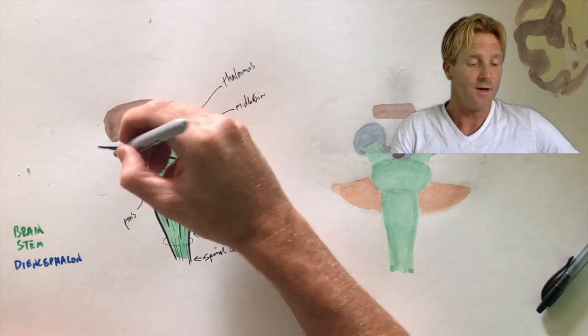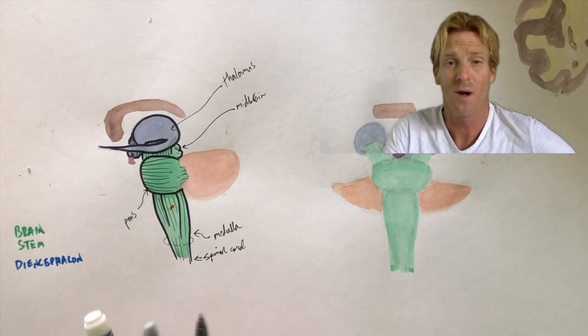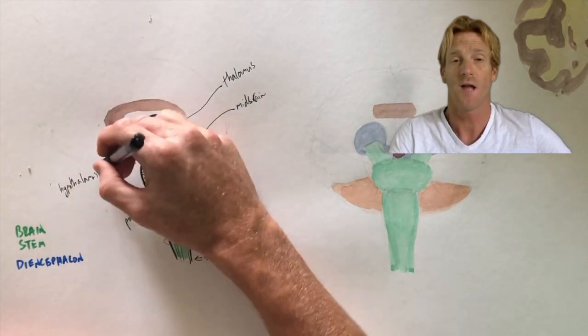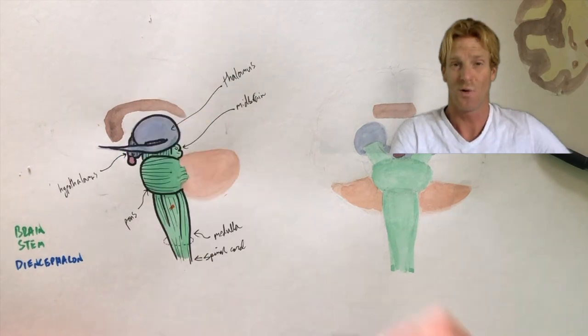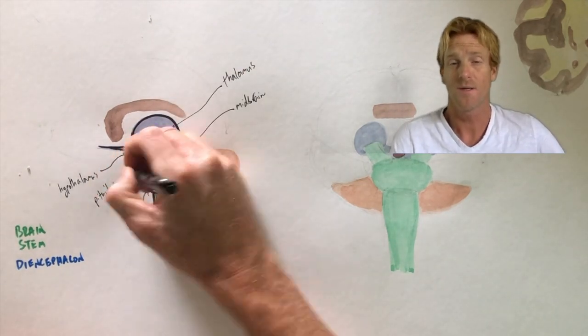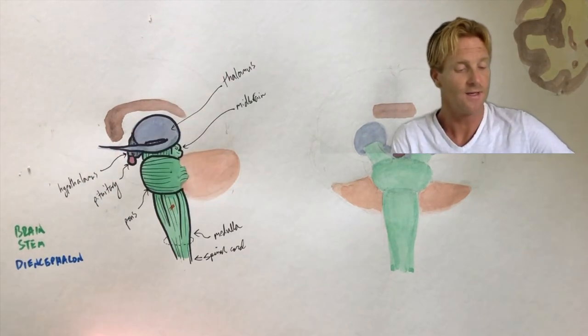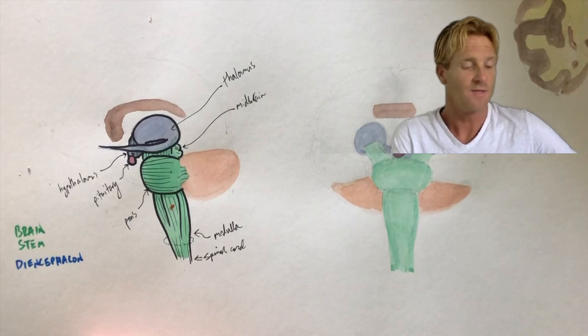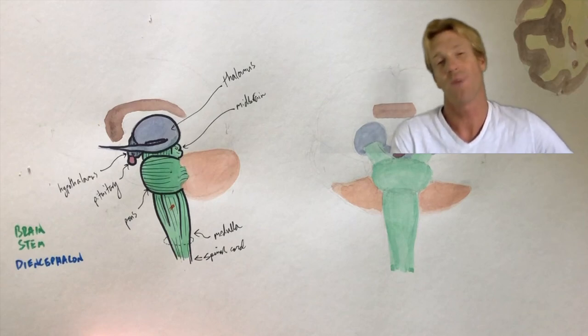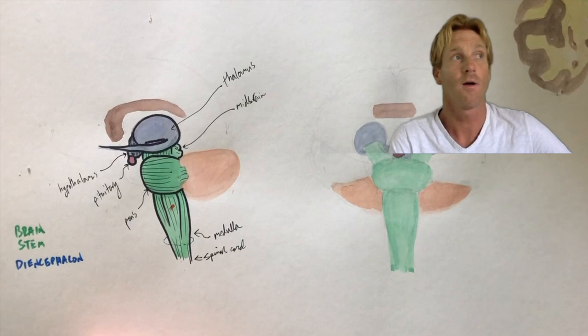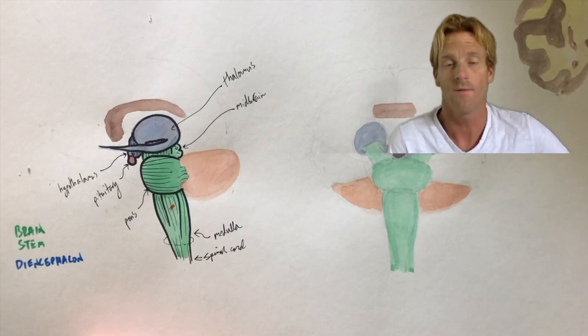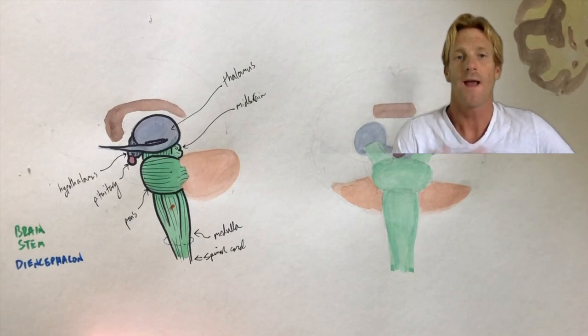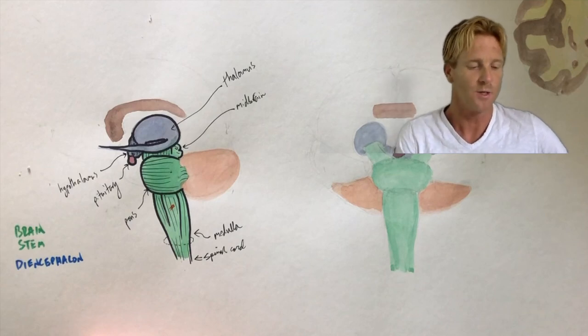Below or inferior to the thalamus is the hypothalamus. This is a really small part of the brain, very important. It controls the autonomic nervous system. It also controls the endocrine system to a large degree because it's connected to the pituitary gland here in red. The hypothalamus is also going to control functions of the body like controlling our thirst, our hunger, and it's really involved in how we react emotionally to different situations and how we process memories.